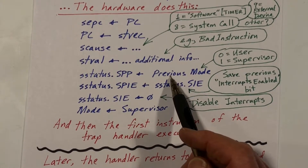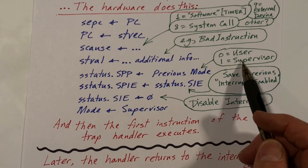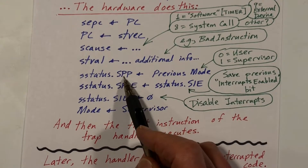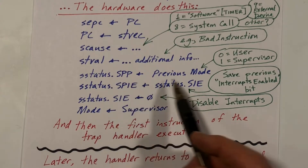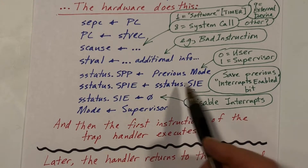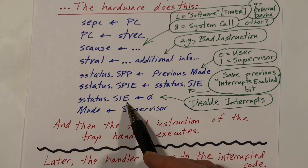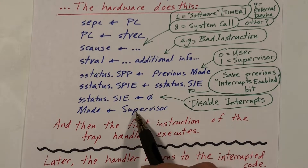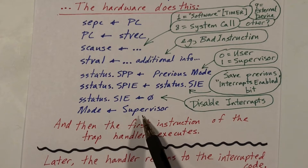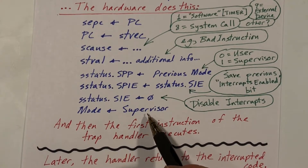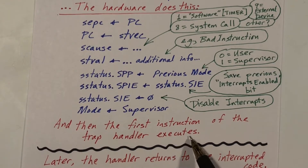The hardware immediately saves the previous mode — whether we were in user mode or supervisor mode — in a bit of the status word, and saves the previous value of the interrupts enabled bit in SPIE. Finally, it disables interrupts and changes the mode to supervisor if it wasn't already. At that point the hardware phase of trap processing is done, and we begin executing the first instruction of the handler code.